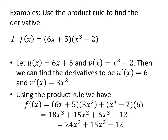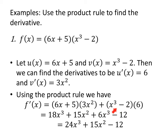Let's use the product rule to find the derivative of f(x) = (6x + 5)(x³ - 2). My first function u(x) is 6x + 5, and my second function v(x) is x³ - 2. The derivative of u(x) is just 6, and the derivative of v(x) is 3x² using our derivative rules. So the product rule says the derivative of f is: first, (6x + 5) times the derivative of the second, 3x², plus the second left alone, (x³ - 2) times the derivative of the first, which is 6.